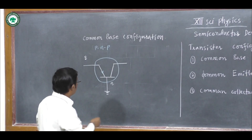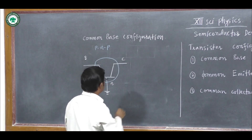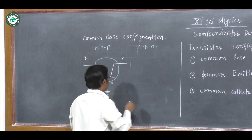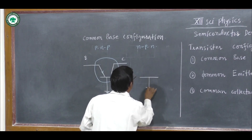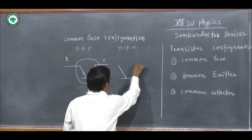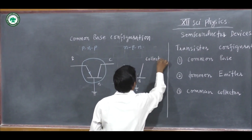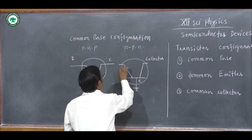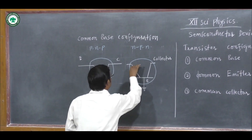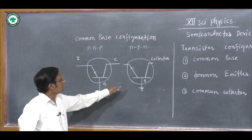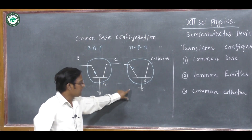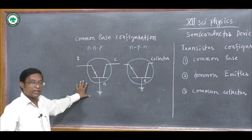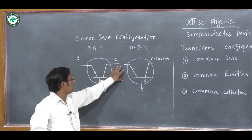For the NPN transistor in the common base configuration, here is the base electrode connected in common — this is B, this is the emitter, and this one is the collector. The direction of the arrow indicates this is the NPN transistor. The base is connected and grounded in the input circuit, and the collector is connected with the base and grounded in the common base configuration.